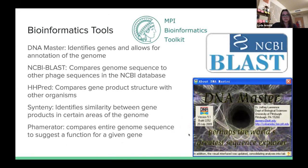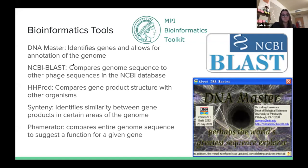We used bioinformatics tools to annotate and determine the function of each gene we were investigating. DNA Master was the annotation program that identifies genes. BLAST compares genome sequences to other genomic sequences, typically looking for phage matches. HHPred compares gene product structure with other organisms and provides a 3D model of the functional protein. Synteny identifies similarity between gene products based on neighboring genes, and Famerator compares entire genome sequences to suggest a function for a given gene.